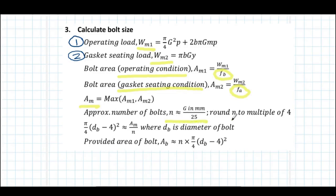The number of bolts is rounded to multiples of four. Once we have the number of bolts, the area of an individual bolt and hence the nominal size of the individual bolt is calculated. The actual provided area of the bolt is stored in the variable ab as shown here.